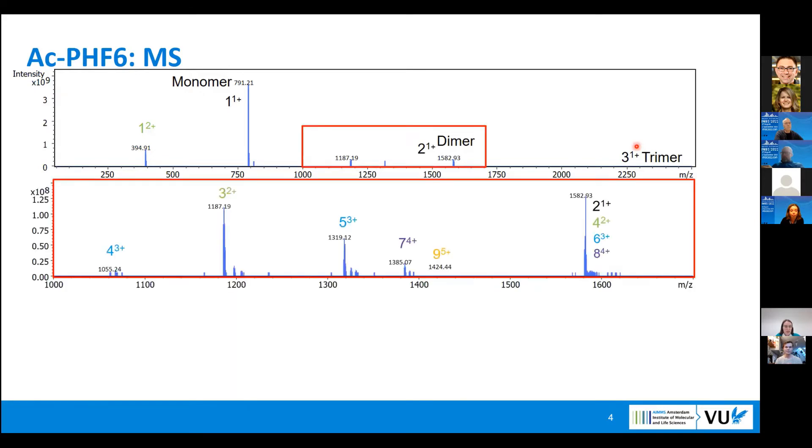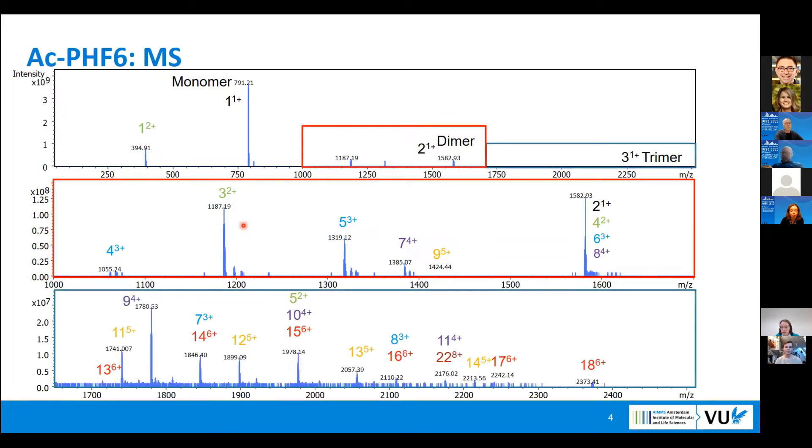But if we zoom in more, because we're interested in aggregates, we actually start seeing more oligomers. If we zoom even more to the higher m/z values, we see even larger oligomers. Here I already gave the assignment of the peaks, like here multiple oligomers present. But how I do it, I will explain a bit later.